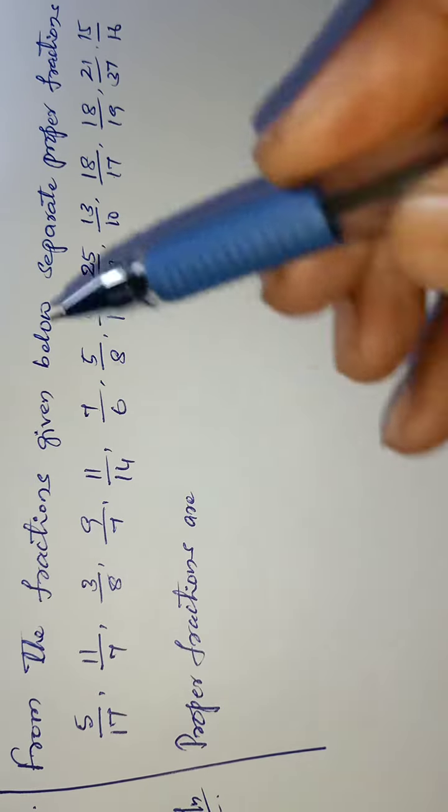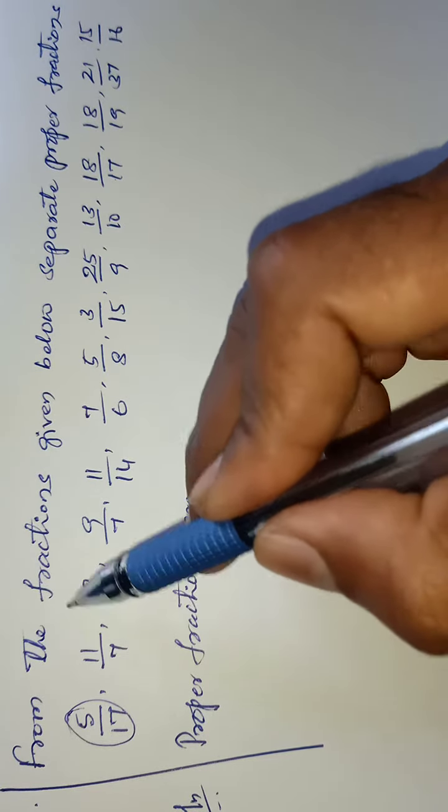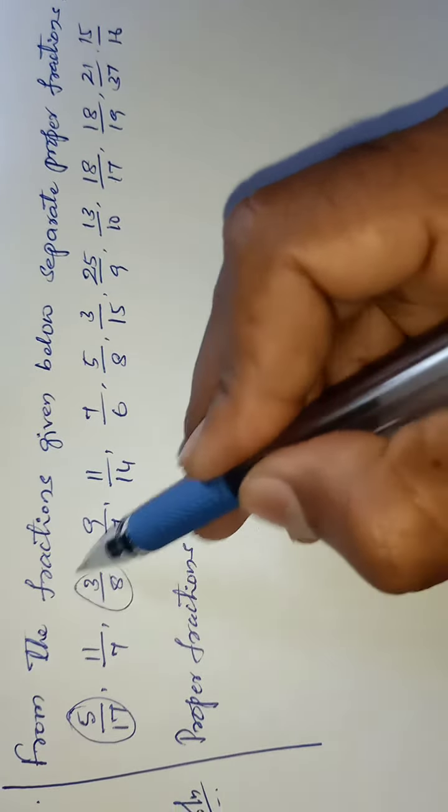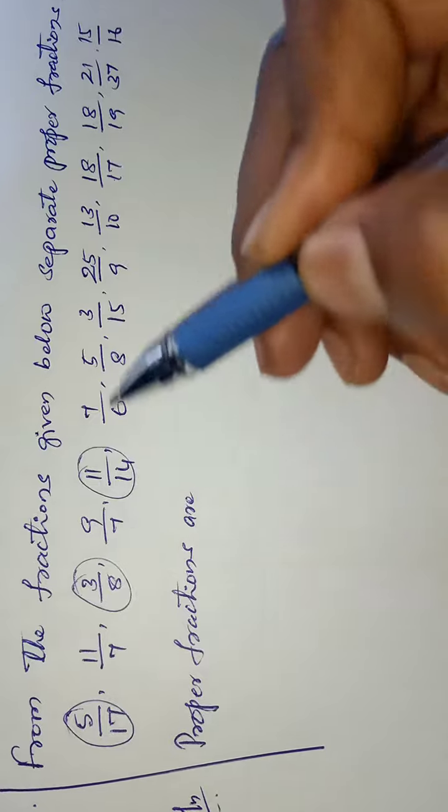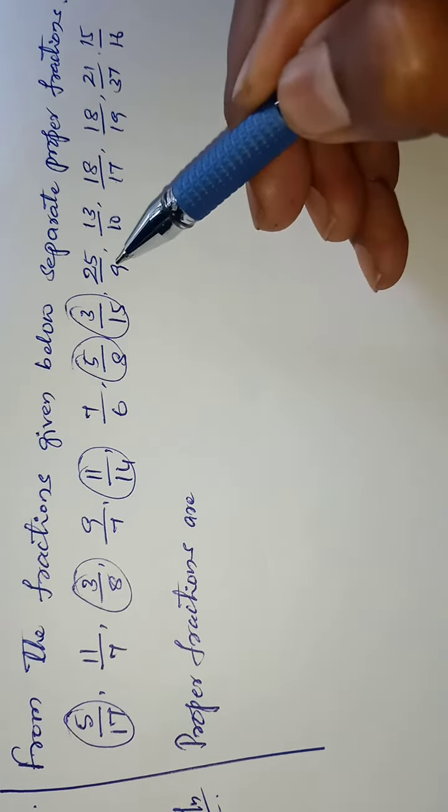5 by 17. Let us circle. And 11 by 7, so here numerator is greater. Numerator is smaller. Numerator is smaller. Numerator is smaller in this one. In this fraction numerator is smaller.